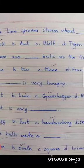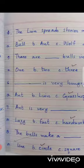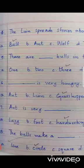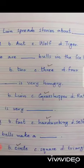Number seven: ant is very blank. Options: lazy, fast, hardworking, selfish. Correct option is hardworking. Number eight: bulls make a blank. Options: line, circle, square, triangle. Correct option is circle.